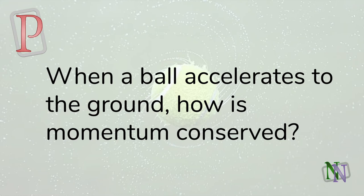We start with the puzzle. When a ball falls to earth it is gaining momentum, but according to the principle of conservation of momentum the total cannot change. How can we explain this?